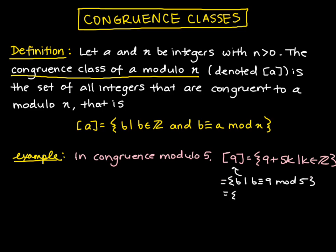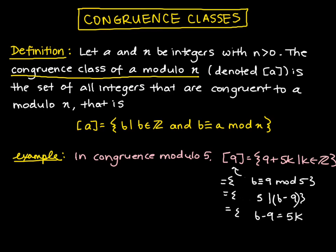That's the same thing as the set of all b such that 5 divides b minus 9. So we want the set of all b such that 5 divides b minus 9. That means b minus 9 equals 5k for some integer k, so we want the set of all b equals 9 plus 5k. Writing it this way is a different form of expressing what's given in the definition.